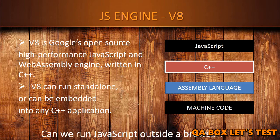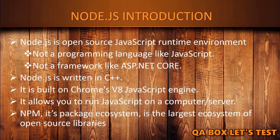In 2009, Ryan Dahl used Google Chrome's JavaScript engine — V8 — and made it function outside a browser. Wrapper code was written around the V8 engine using C++, making it executable directly on the operating system. So Node.js is an open source JavaScript runtime environment. Please keep in mind that it is not a programming language like JavaScript, and also it is not a framework like ExpressJS or ASP.NET. Node.js is written in C++ and built on Chrome's V8 JavaScript engine, so you can say that V8 is at the heart of Node.js.